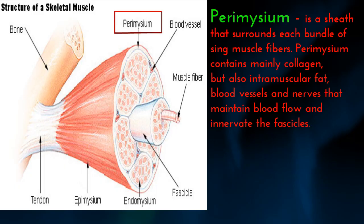Perimysium is a sheet that surrounds each bundle of single muscle fibers. Perimysium contains mainly collagen, but also intramuscular fat, blood vessels, and nerves that maintain blood flow and innervate the fascicles.